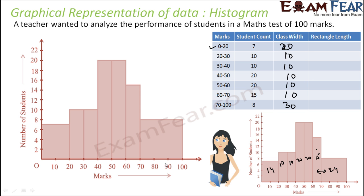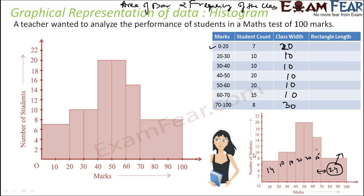Since the width is larger here, the area is not giving the correct frequency value. The area of a bar represents the frequency of the class. Looking at these area values, we think this class has the maximum frequency — but the maximum frequency actually belongs to a different class. This is not a correct graph, and the reason is that the class widths are not the same.